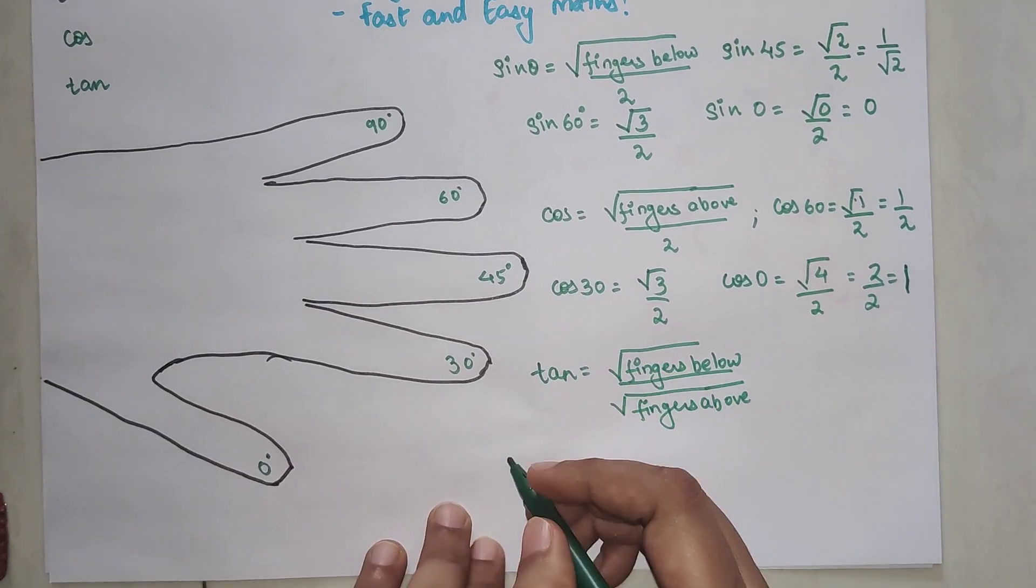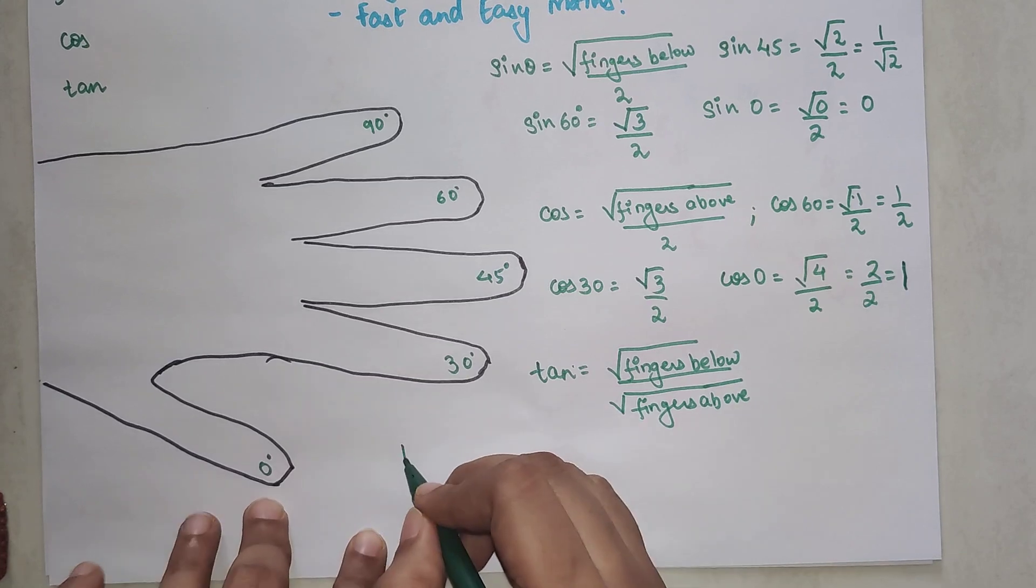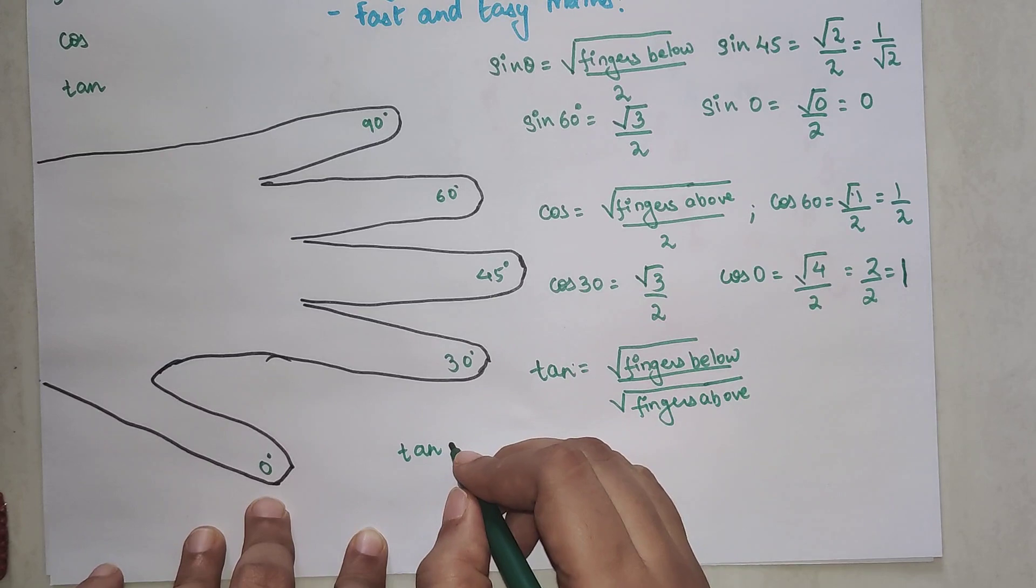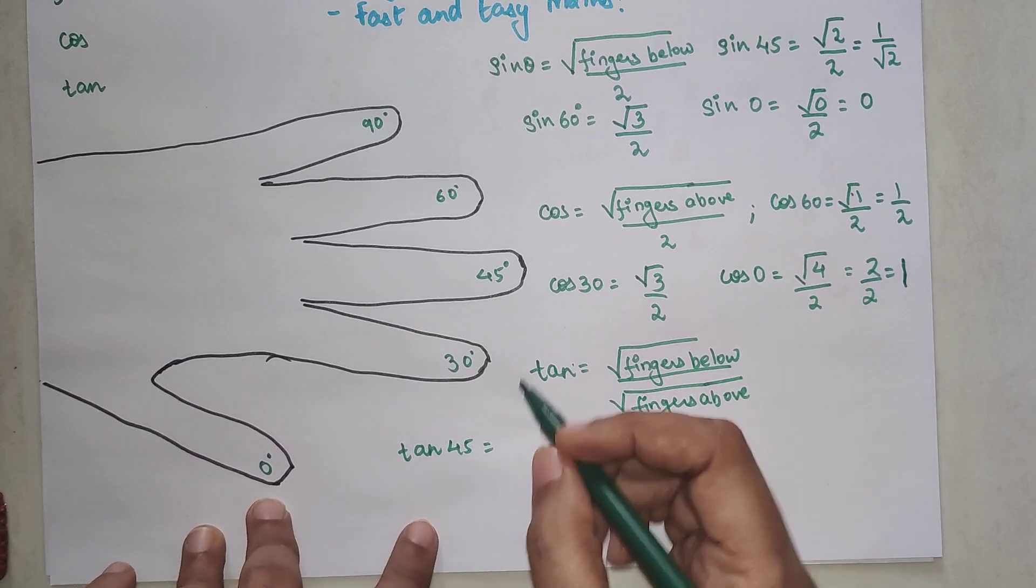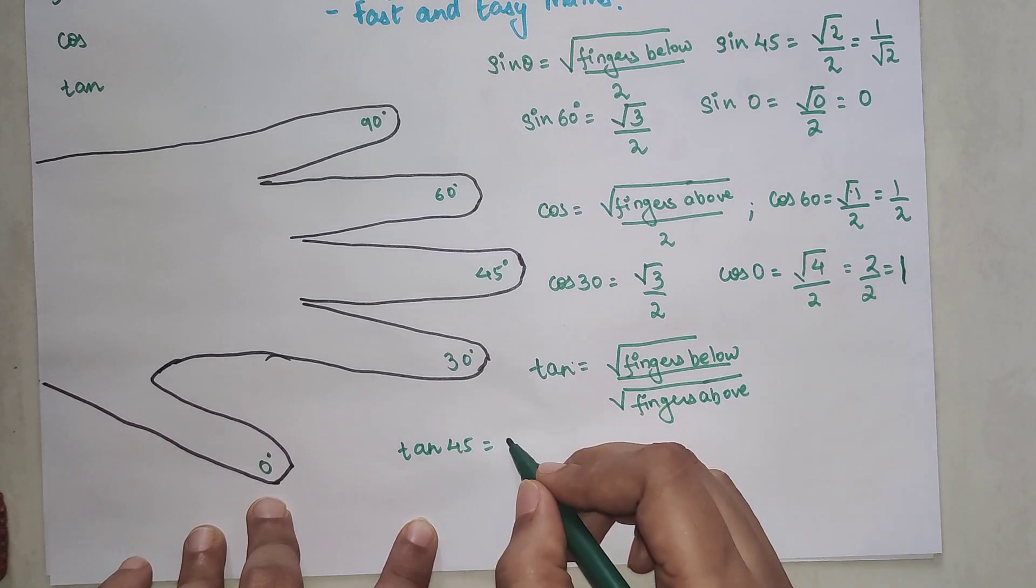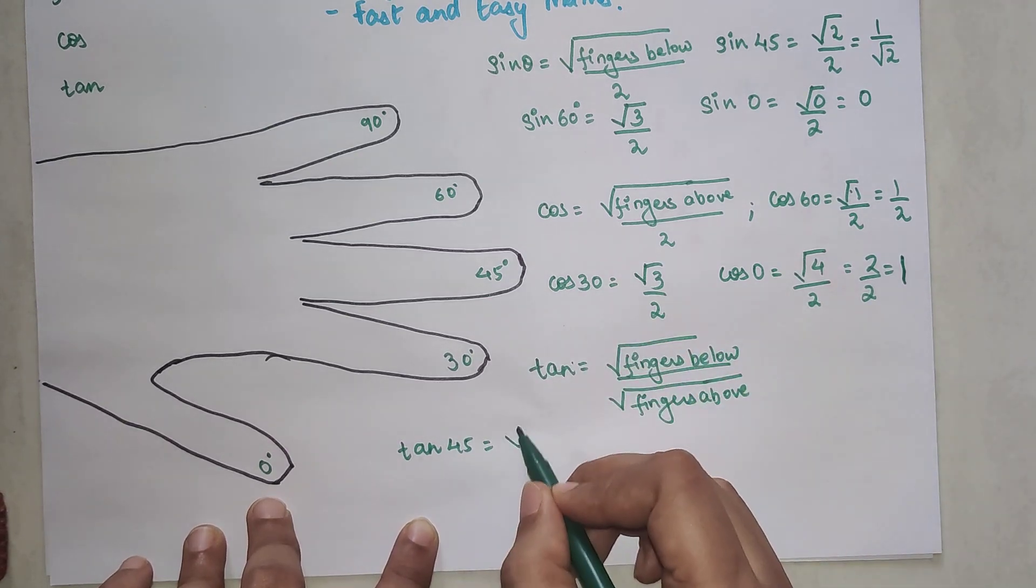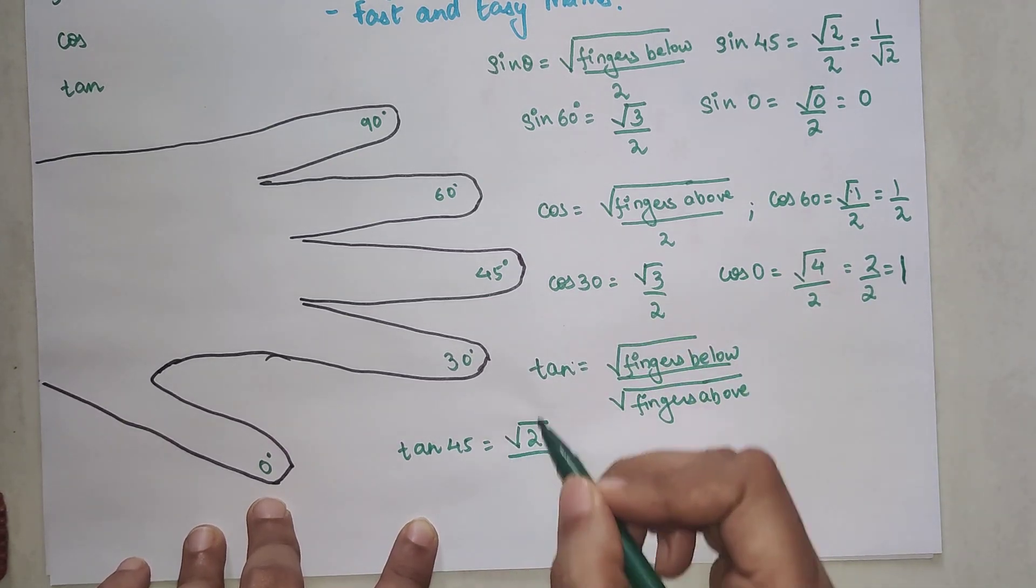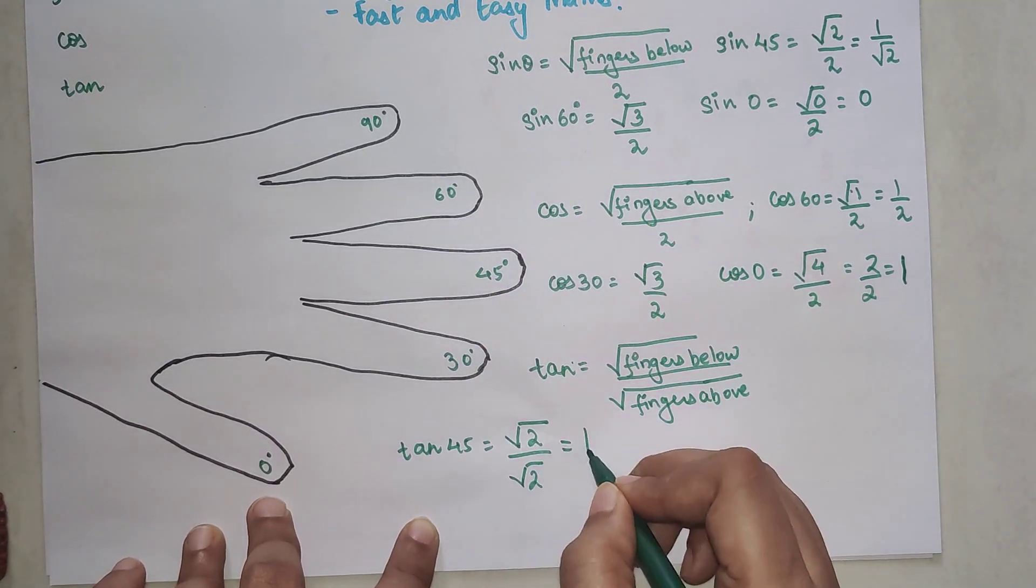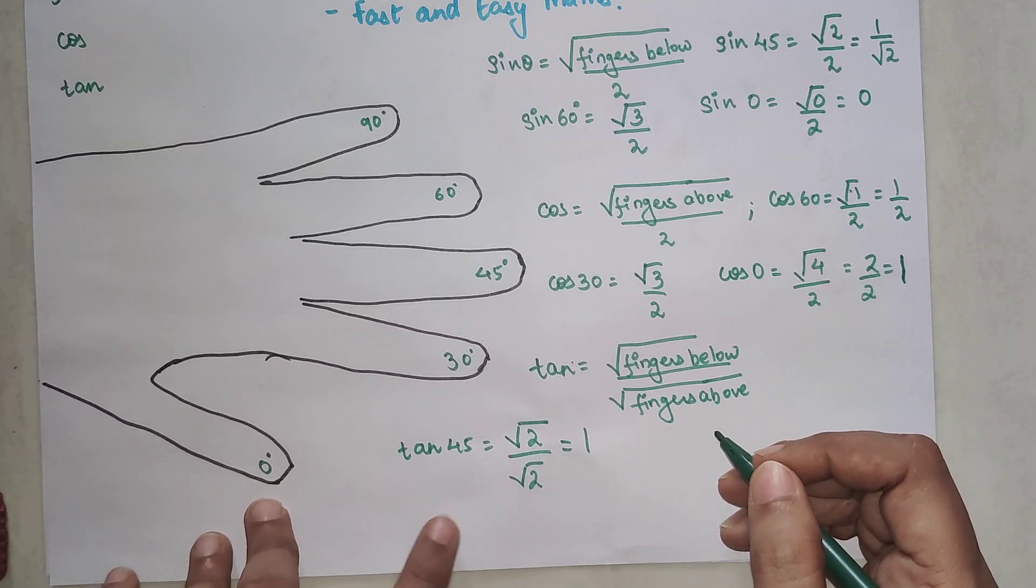So tan theta, let's say for tan 45. Now how many fingers are below 45 is 2 and how many fingers are above 45, again 2. So root 2 upon root 2 gets you 1.